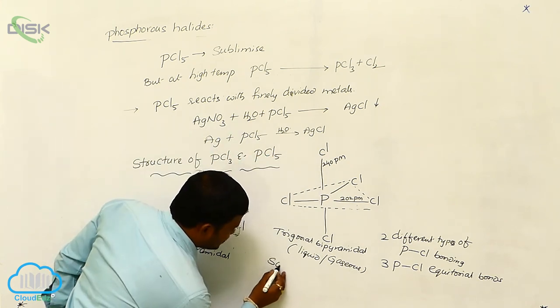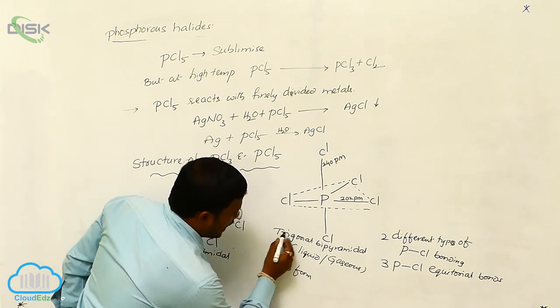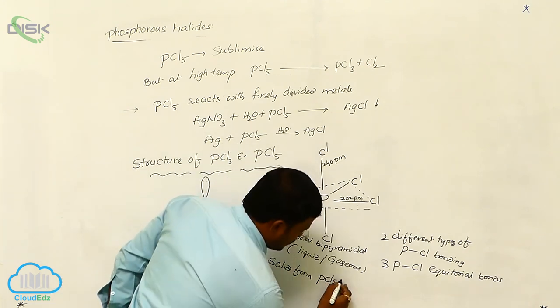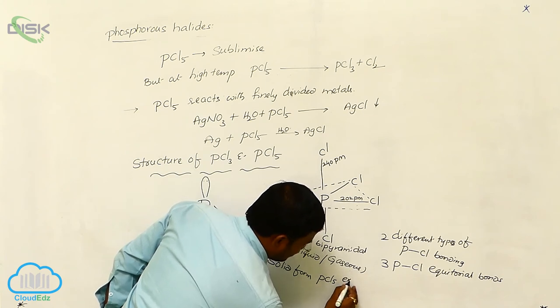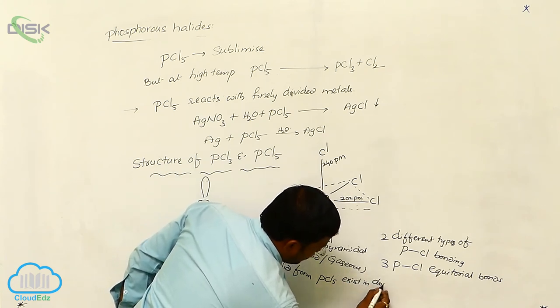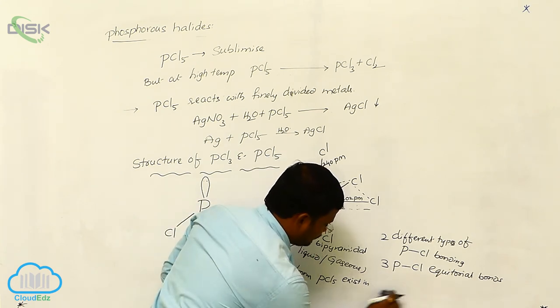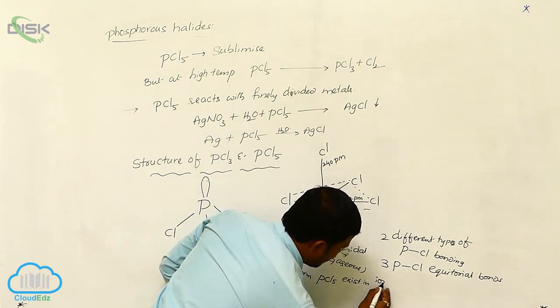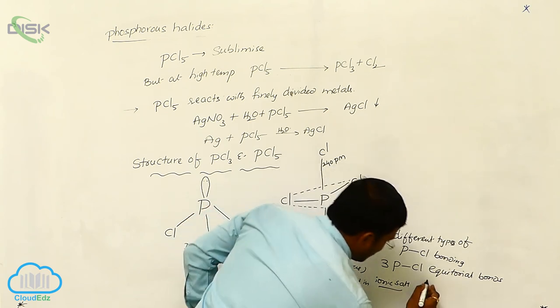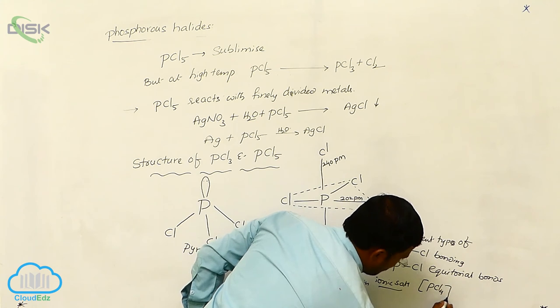Whereas, especially in solid state, solid form phosphorus pentachloride exists in dipolar or ionic salt form like PCl4 minus and PCl6 plus.